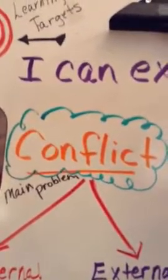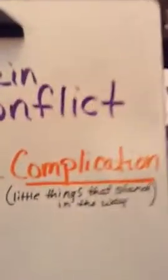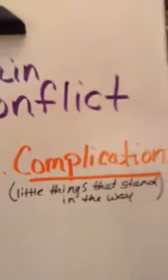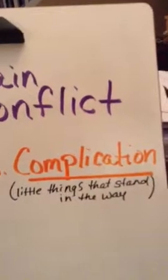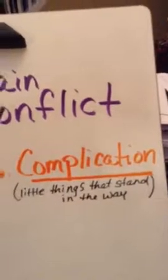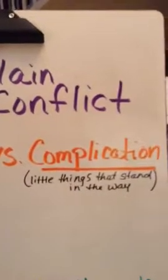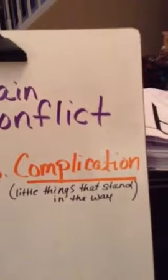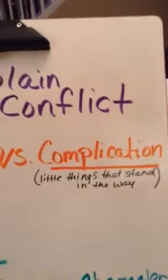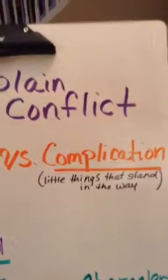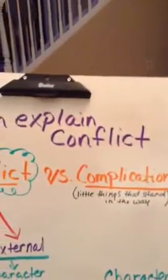So the conflict in a story is the main problem in the story. Versus complications — there are many complications that occur as the story unfolds. As you're moving up that rising action, the main character goes through many little things that stand in the way of solving their main conflict. That's what you have to look at when deciding: is this the main conflict, or is it just a complication that's occurring?